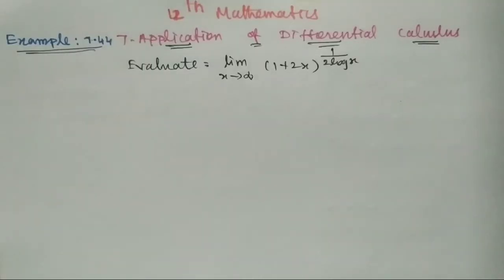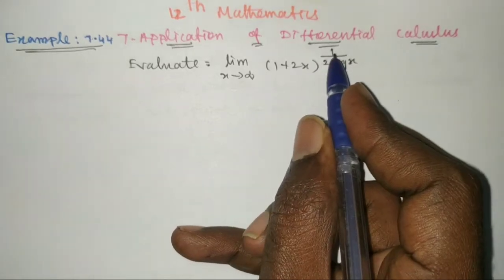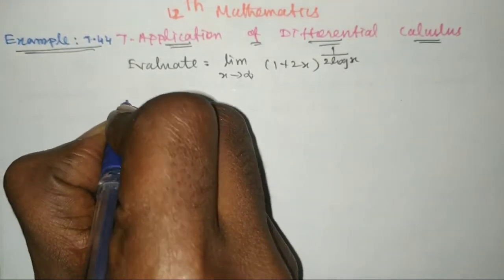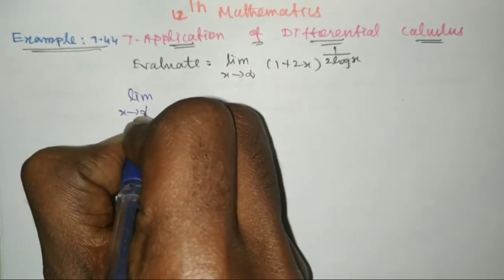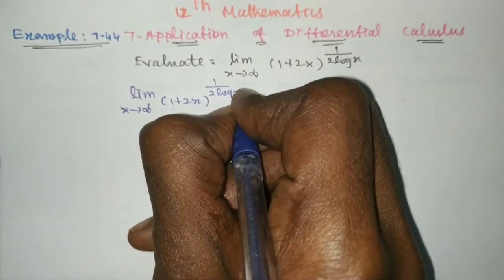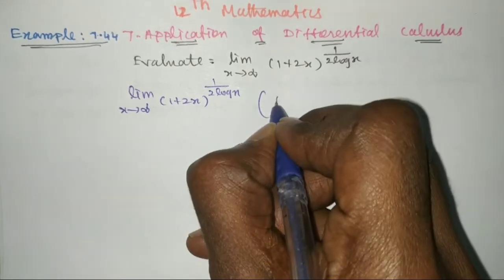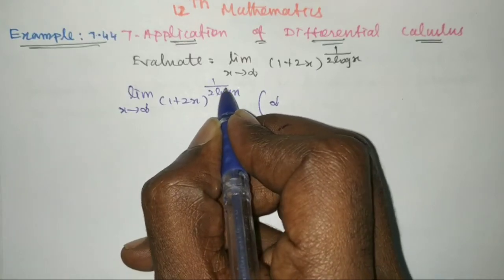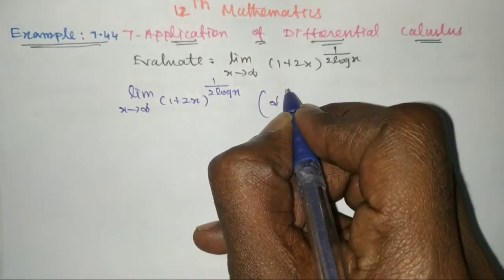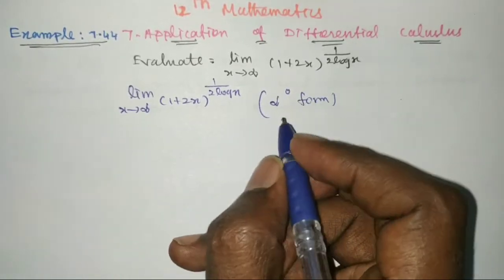Hello viewers. 12th mathematics, example 7.44, application of differential calculus. Evaluate the limit as x tends to infinity of (1 + 2x)^(1 / (2 log x)). Applying the limit, we get infinity to the power of 1 over 2 log infinity, which is 1 over infinity, giving 0. So we have an indeterminate form.